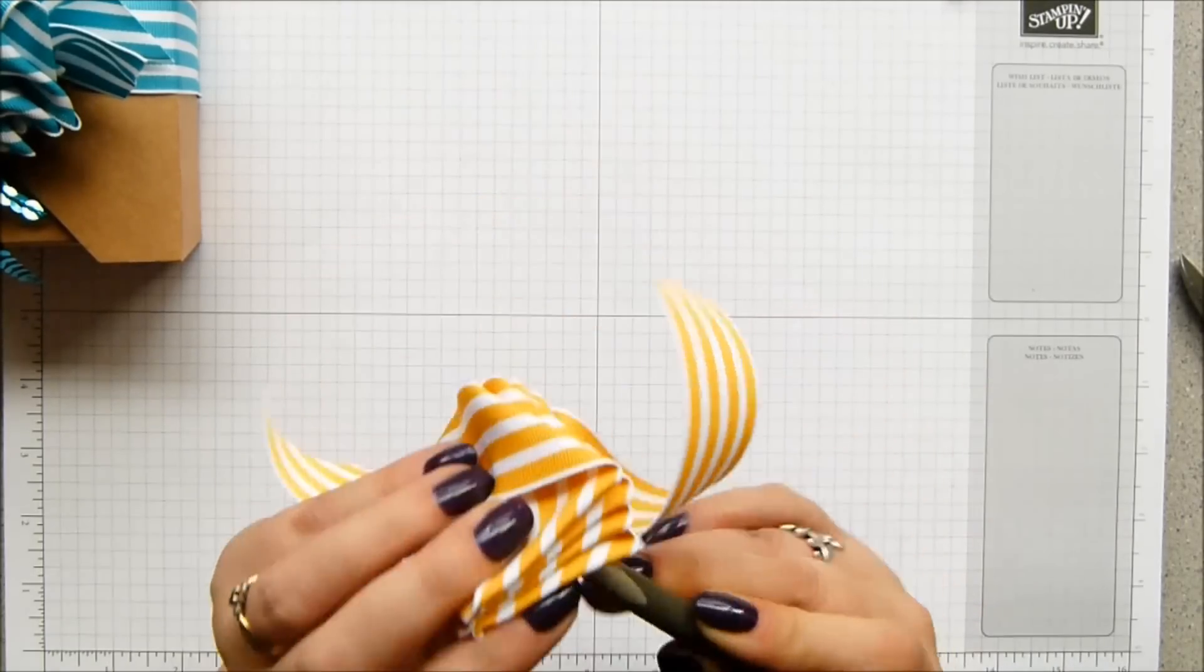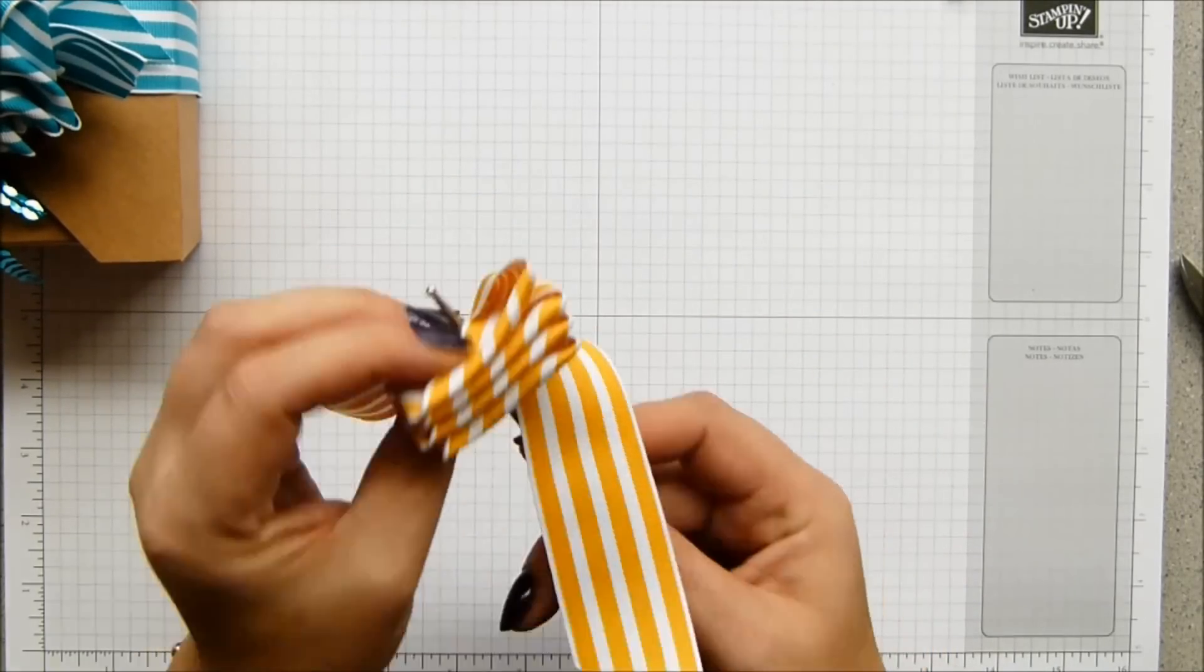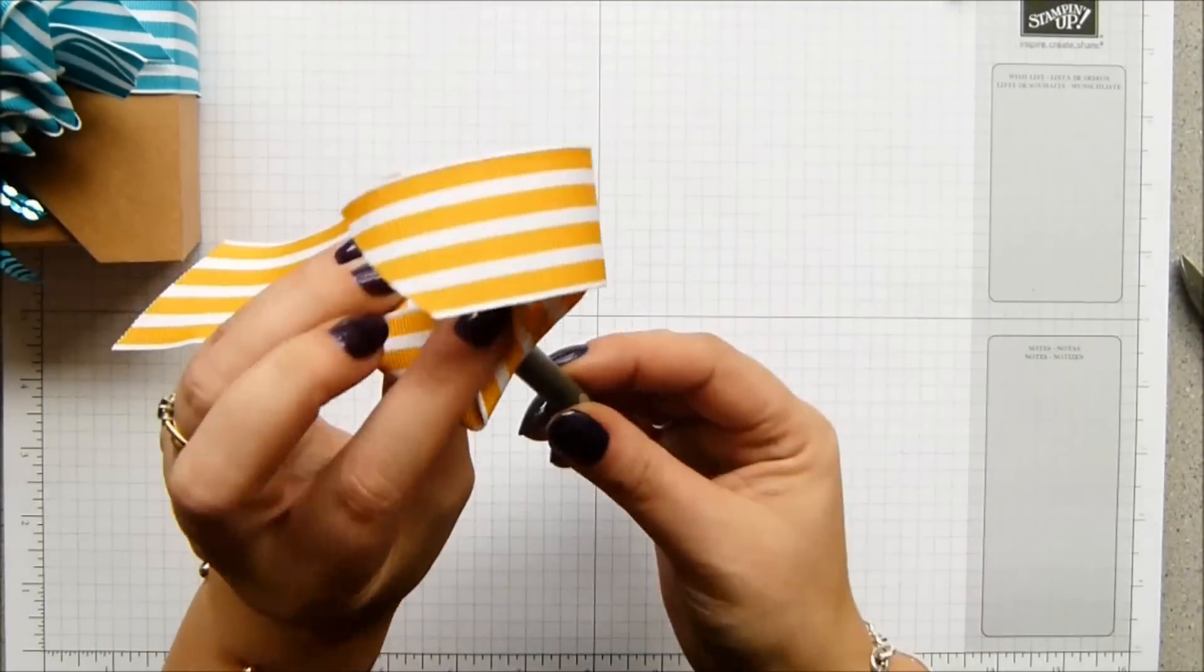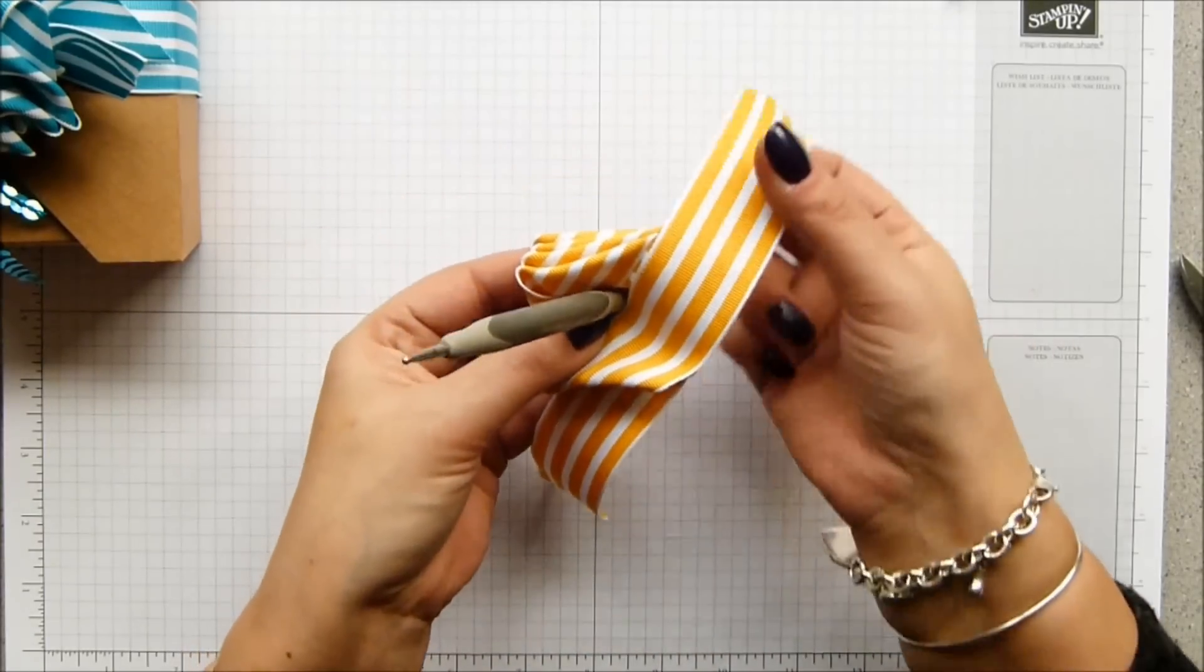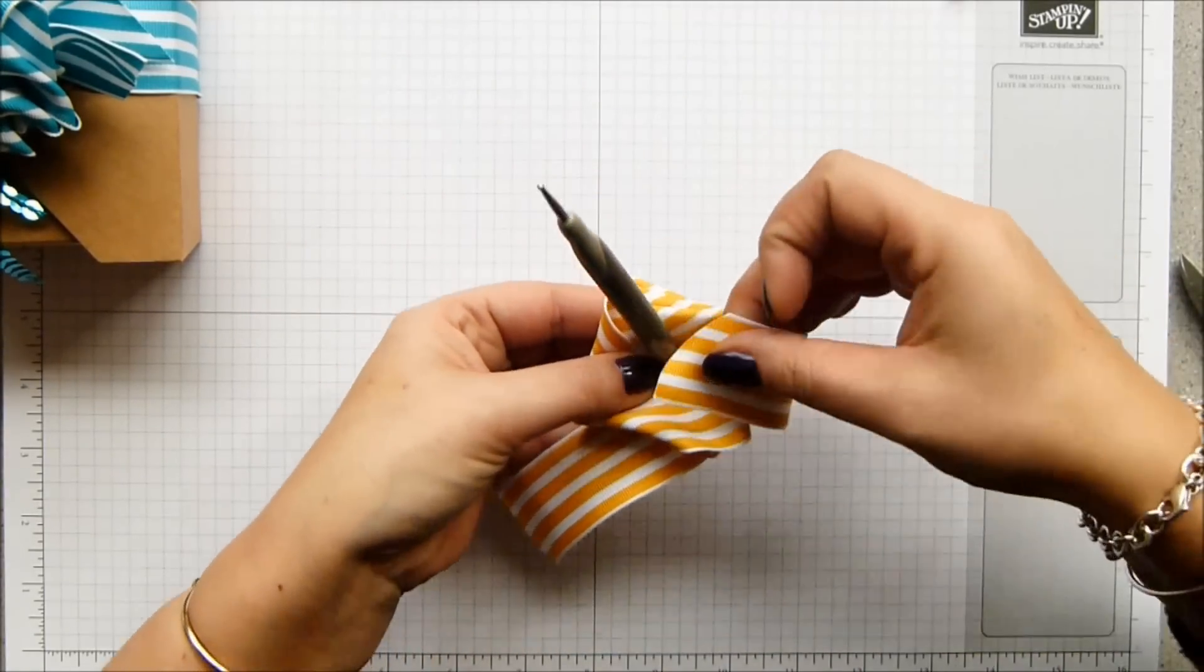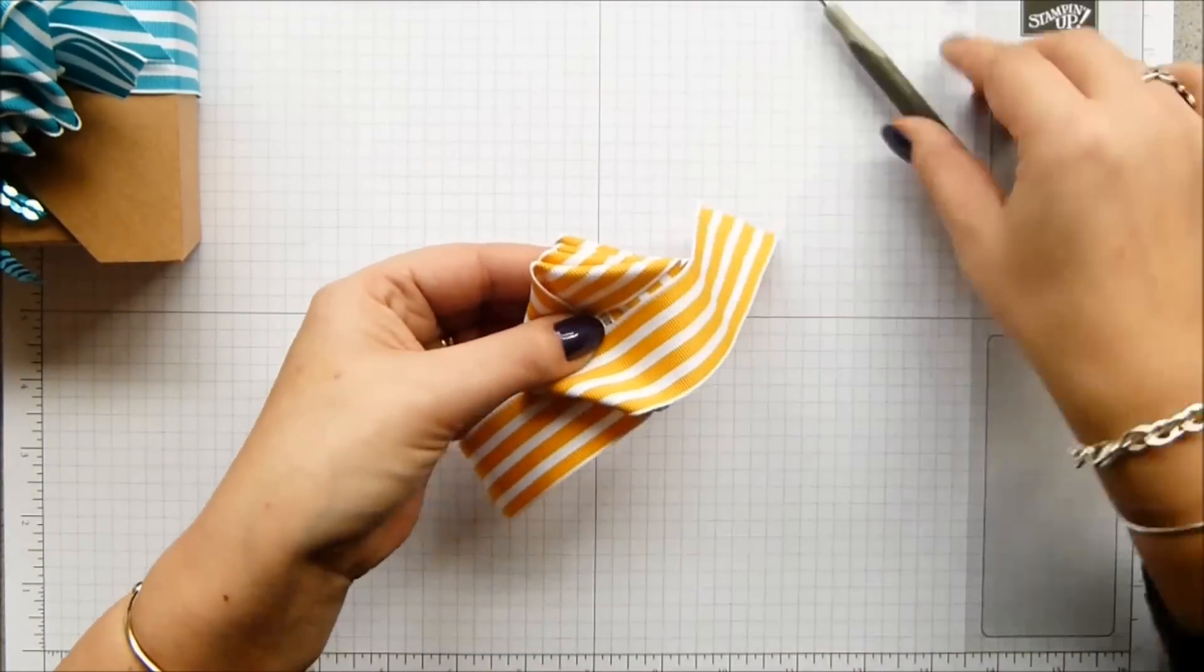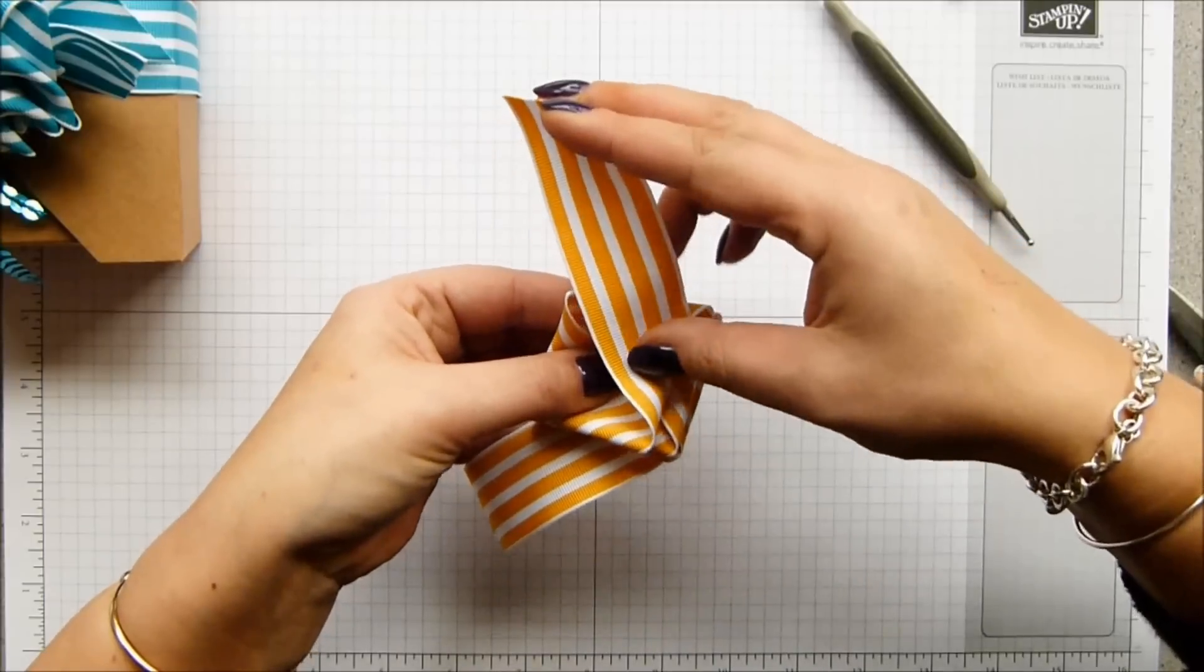I'm just going to undo that one actually because I want a little bit of extra length. So you can't see it but there is a hole there. I'm going to get my bone folder and just wiggle so you can see that that goes all the way through.